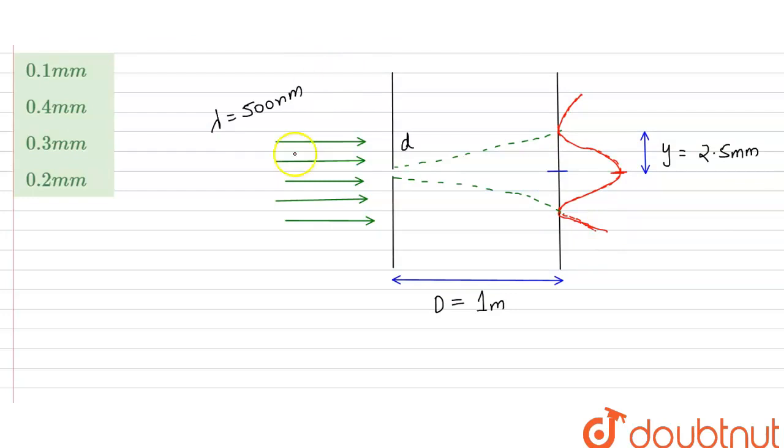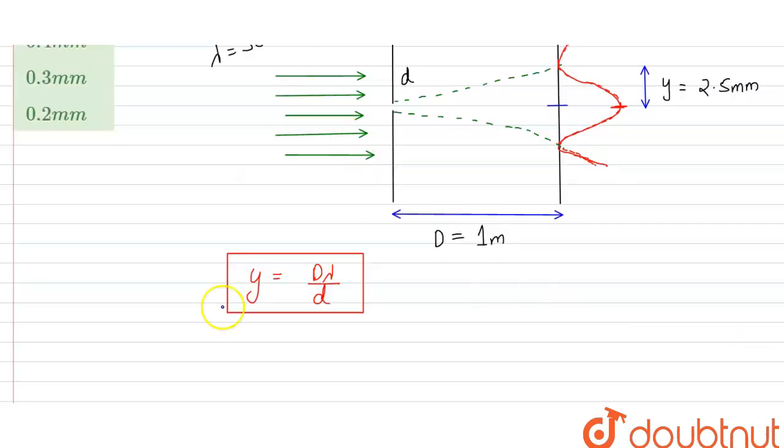Students, we have a formula for calculating the value of y, which is y = Dλ/d. This is our formula for calculating the first minima distance. From here, the value of d can be written as d = Dλ/y.